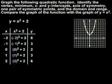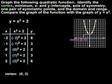Remember that the graphs of all quadratic functions are parabolas. Next, we're asked to identify the vertex of the parabola. Note that the vertex is either the highest point or the lowest point on the parabola, depending on whether the parabola opens upward or downward. In this case, since the parabola opens upward, we can see that the vertex is the lowest point on the parabola, which is (0, 2).